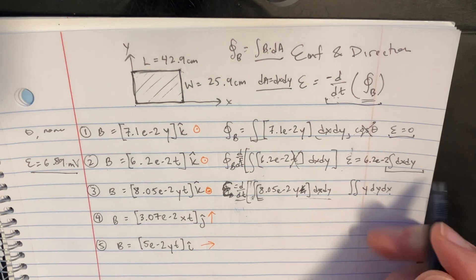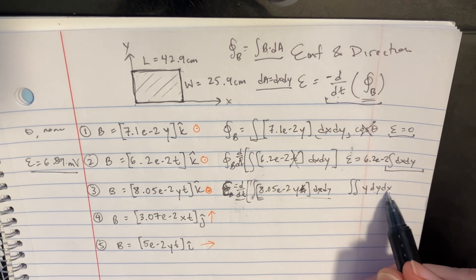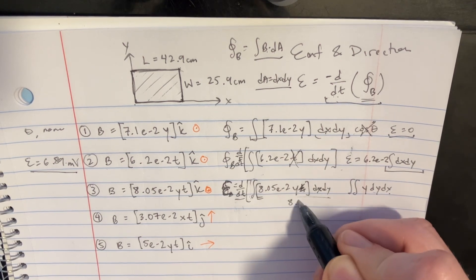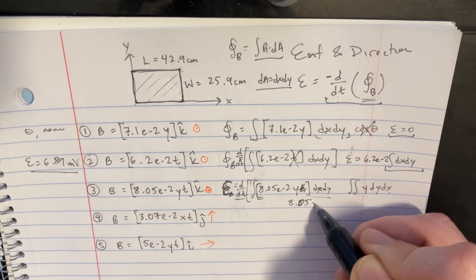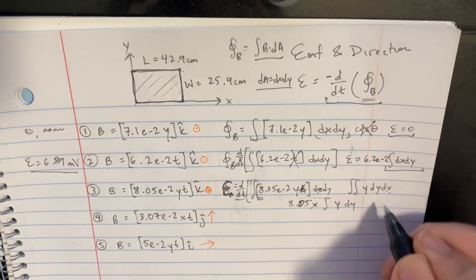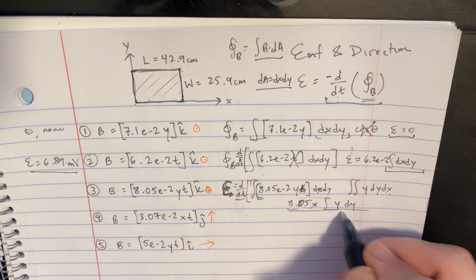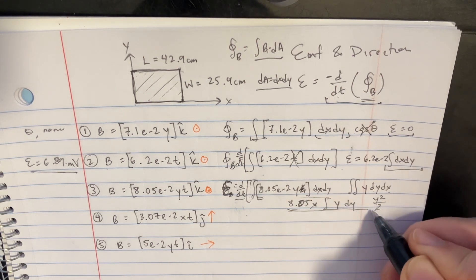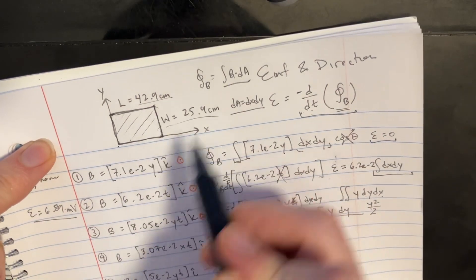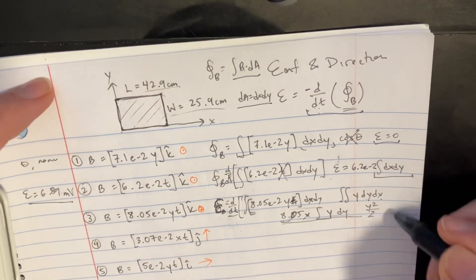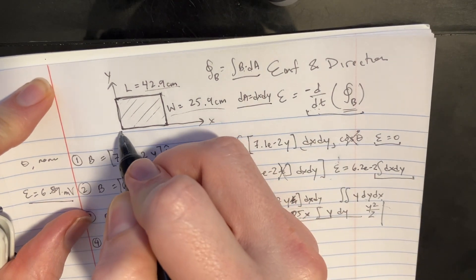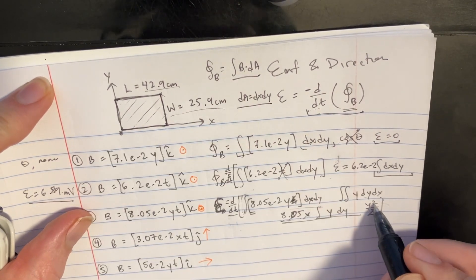Essentially, this dx thing just turns into an x. So we can pull that out in the end. You're kind of going to get 8.05, and then there's an x there, and then there's an integral of y dy. So you can try doing that, and that would be y squared over 2 times whatever you get over here. So the x's and the y's are basically going to be these things.